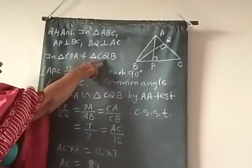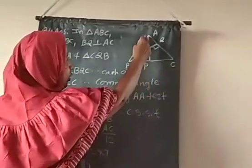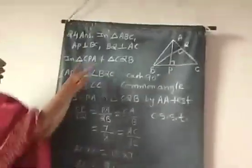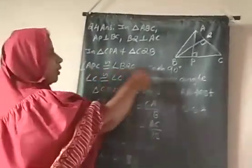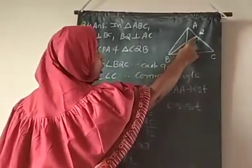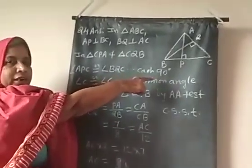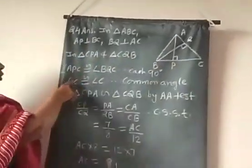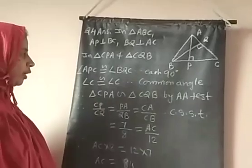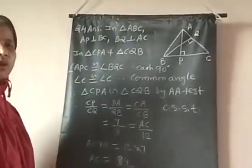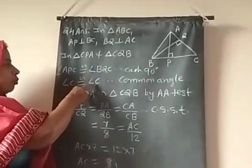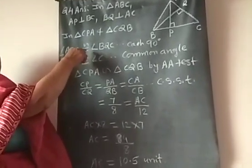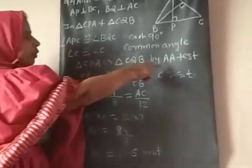Consider triangle CPA and triangle CQB. In these two triangles, angle APC is congruent to angle BQC because they are both 90 degrees. Then, vertex C is common to both triangles; therefore angle C is congruent to angle C. Whenever a common vertex is present, you can use a single letter to denote that angle. So by the A-A test, these two pairs of angles are congruent, and therefore the triangles are similar by A-A test.